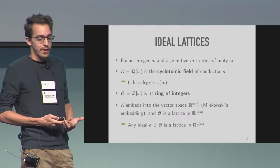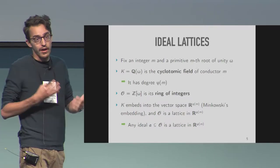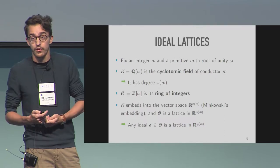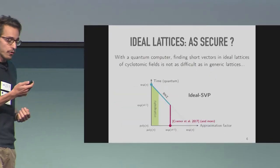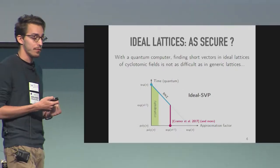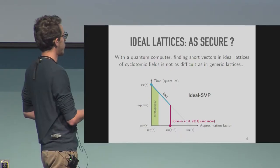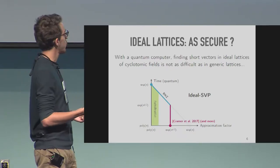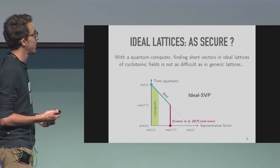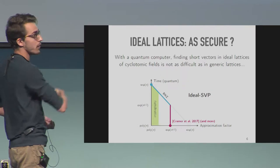Ideal lattices come with all kinds of additional algebraic structure compared to generic lattices, so they allow building very interesting protocols. But you have to wonder: does the problem of finding short vectors become simpler? Yes, it does — it has been proven that you can find shorter vectors more efficiently, at least with a quantum computer. This is the result of a long series of works culminating in Cramer et al. 2017, where it was shown that in ideal lattices you can find, in quantum polynomial time, a sub-exponential approximation of the shortest vector.